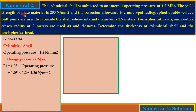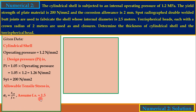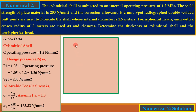Since Syt is given and fs is not provided, assume fs = 1.5 for ductile material. Allowable tensile stress sigma_t = Syt / fs = 200 / 1.5 = 133.33 N/mm².